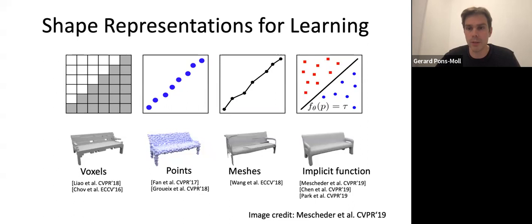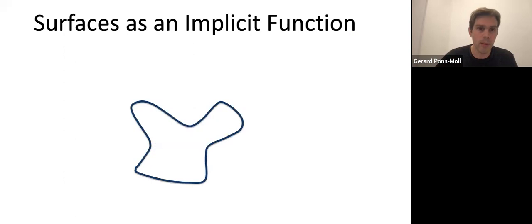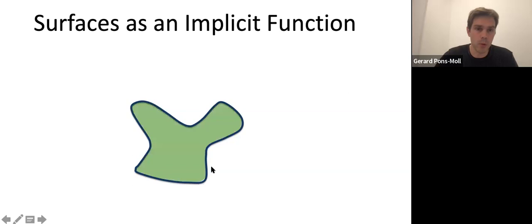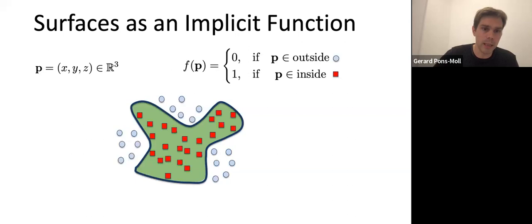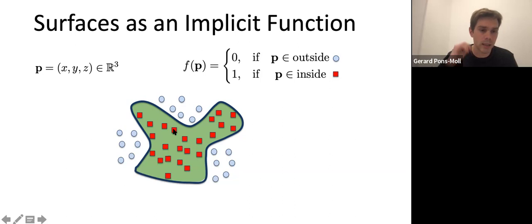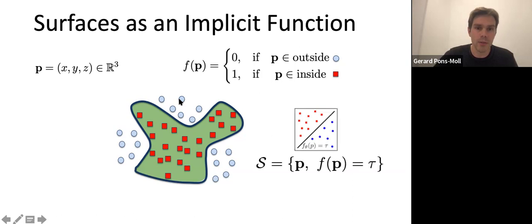Just to refresh your memory — an implicit function means, in this case, you represent a boundary implicitly with a function that takes a value zero if the point is inside and takes a value one if the point is outside. So this function classifies the points inside as one class and the points outside as another class. Basically, the surface is all these points that lie on the boundary — all the points for which f(p) takes a value tau, in this case 0.5, because it's right at the boundary between 0 and 1.